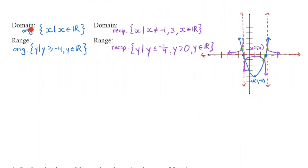For the original quadratic — that parabola — the domain is x as an element of the real numbers. For the range, looking at the vertex coordinate, negative 4 is our minimum value. So the range is y greater than or equal to negative 4, and y is an element of the real numbers.